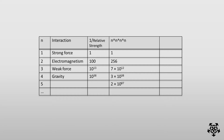Why stop at 4 forces or 5? In my view, the decreasing strengths of the forces indicate a hierarchy and that the interactions are an emergent phenomenon caused by a deeper mechanism. We'll propose one in a later video and revisit this table to populate the last column with some calculated values.